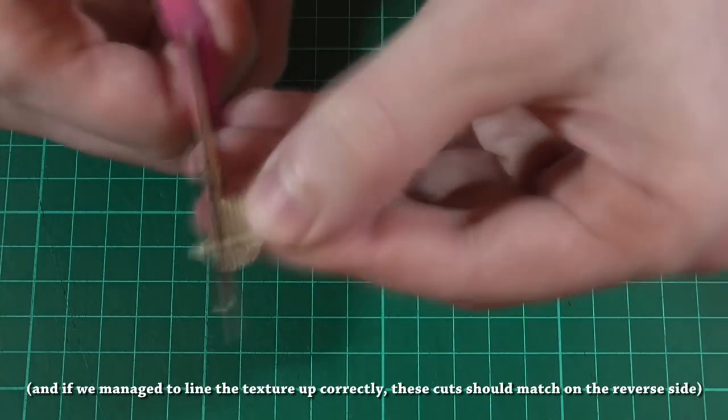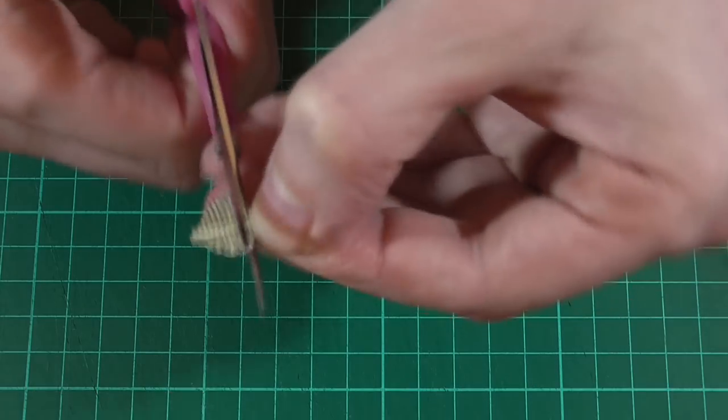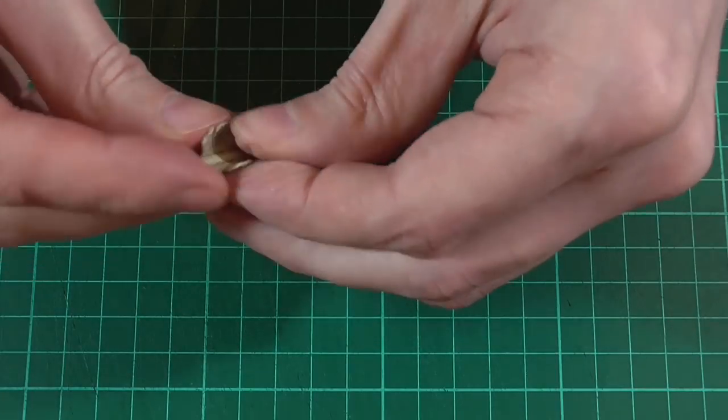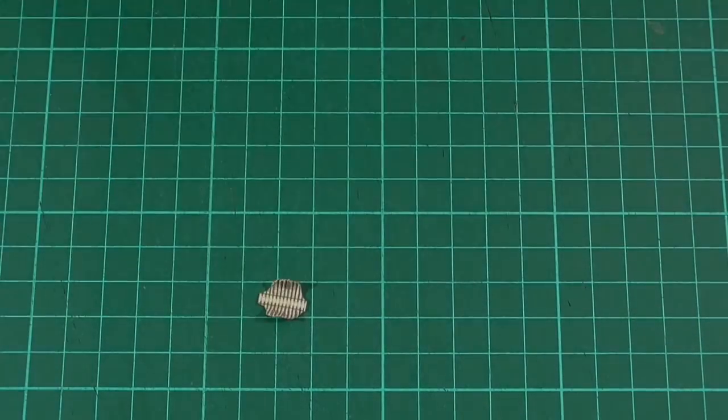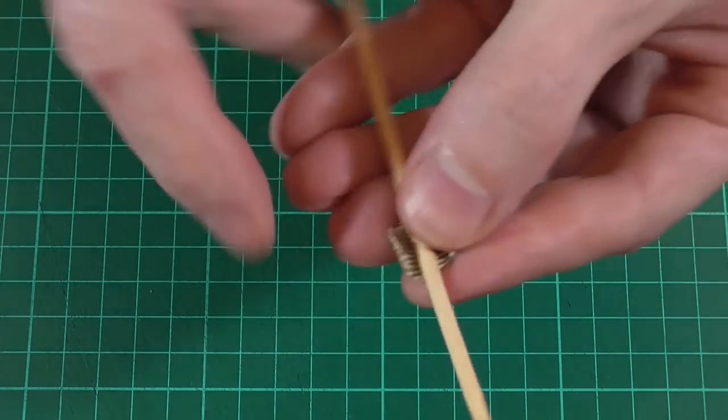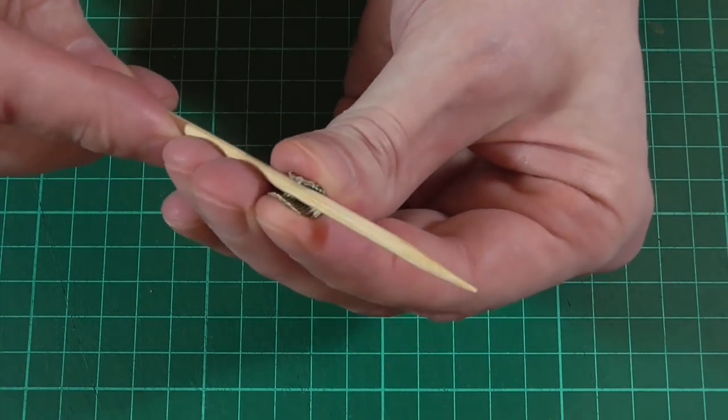So I'll just speed this part up while I'm doing that. And when we're done, we can exaggerate the existing curve of the toilet roll tube a little just by bending it inwards. And if that's not enough, we can also take a barbecue skewer or something similar and use that to get even more of a curve.